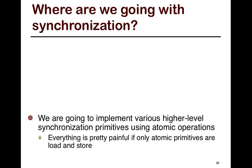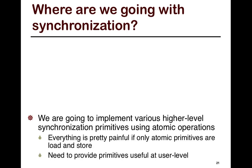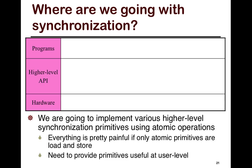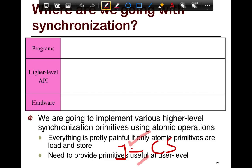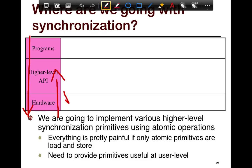I'm going to lay out an overview of where we are going with critical sections. We will essentially implement various higher-level synchronization primitives using atomic operations. You can split your program into three parts: your programs, your higher-level API, and your hardware as you go lower. Each of the lower levels provides primitives that are exposed to the higher level.